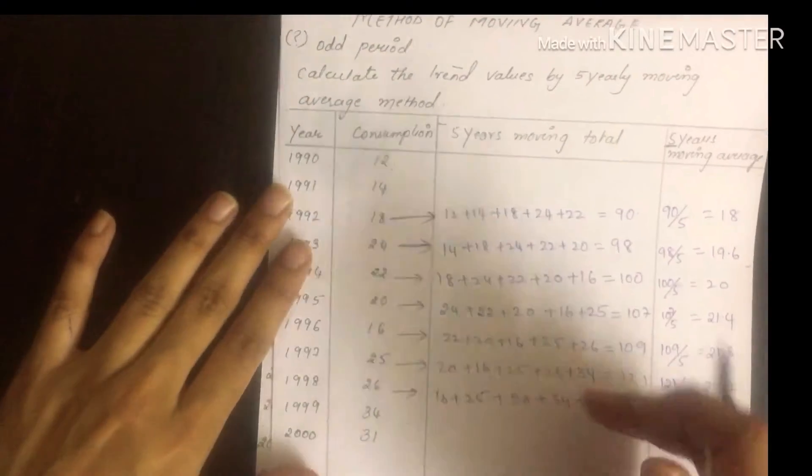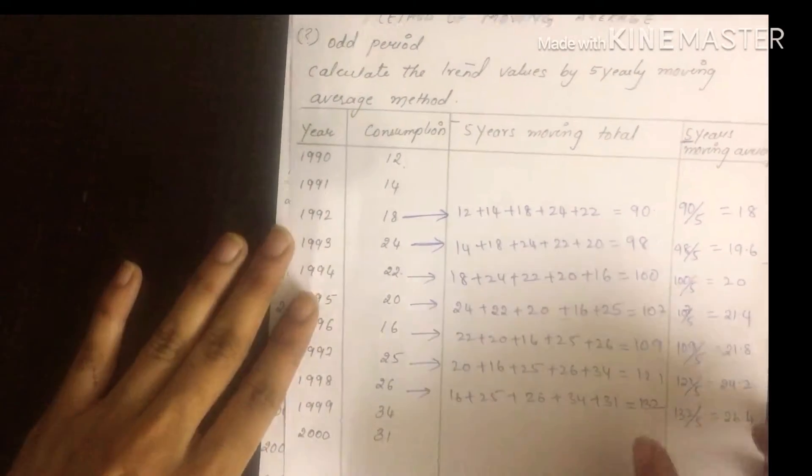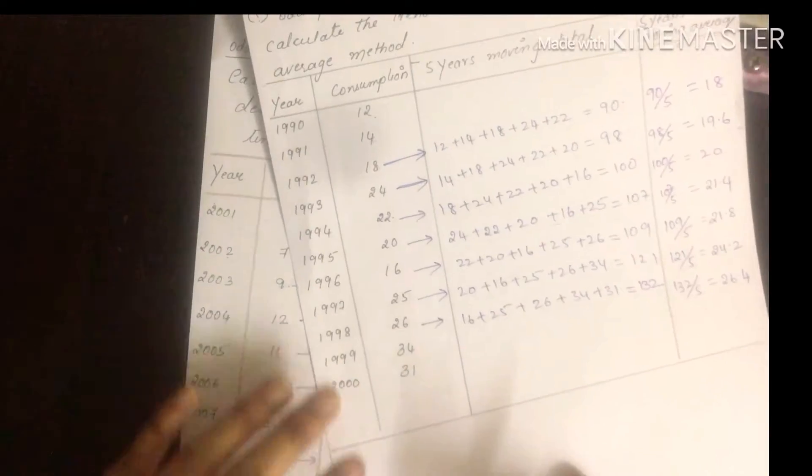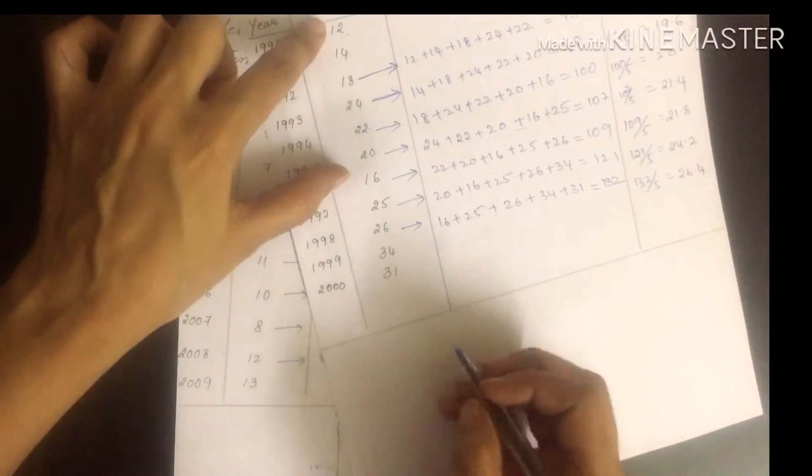Same as before, if they ask you to plot a graph, do it the same way. So 3 years and 5 years. If they ask for 7 years, what are you going to do? 7 years - suppose same data here for 7 years: 12, 14, 18, 24, 22, 20, 16, 25, 26 likewise, same data.